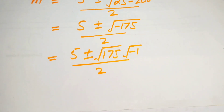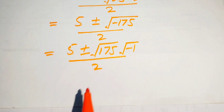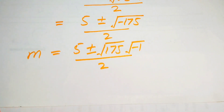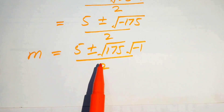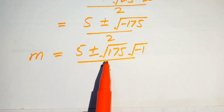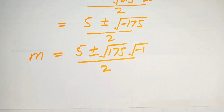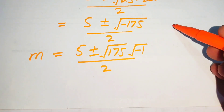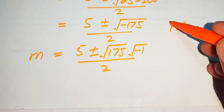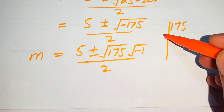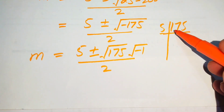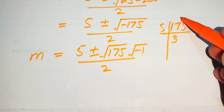We have 175 under the radical, so we convert it to simplified form by finding the prime factors of 175. Dividing 175 by 5 gives 35, and dividing 35 by 5 gives 7.